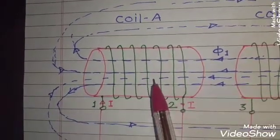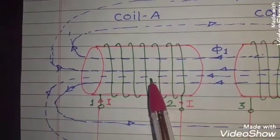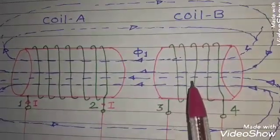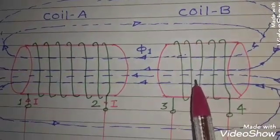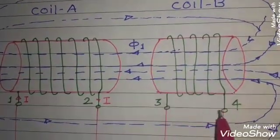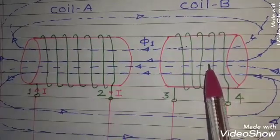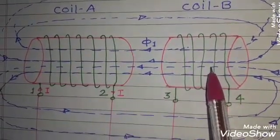The number of turns of coil A, we may call it N1. While the coil B is also having similar turns on its surface and the terminals are 3 and 4. Let us say that the coil B is having the number of turns as N2.